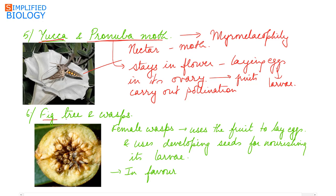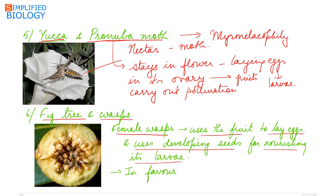Another example is the fig tree and the wasp. The fig tree can only use the wasp as its partner in pollination. The female wasp uses the fruit to lay eggs and also uses its developing seeds to nourish its larvae. In return, it carries out pollination.